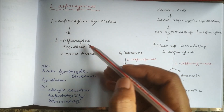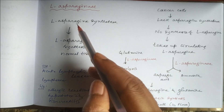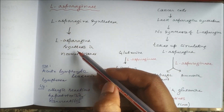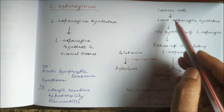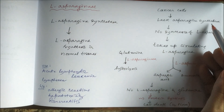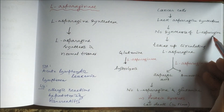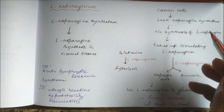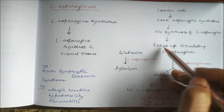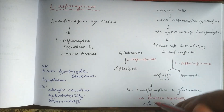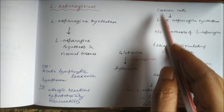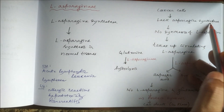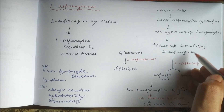Usually L-Asparagine synthesis occurs in normal tissues. The enzyme required for L-Asparagine synthesis is L-Asparagine synthetase. But cancer cells lack the Asparagine synthetase enzyme, so there will be no synthesis of L-Asparagine, which is an amino acid required for protein synthesis. So cancer cells take up the circulating L-Asparagine from outside because they cannot synthesize it themselves.